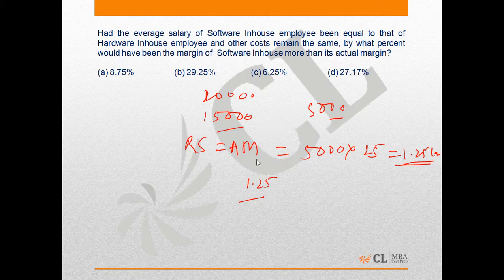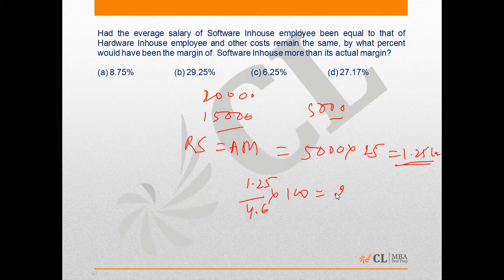The actual margin was 4.6 lakh, as calculated previously. Therefore, the required percentage is (1.25 / 4.6) × 100, which is approximately 27%. Hence, option D is the correct answer.